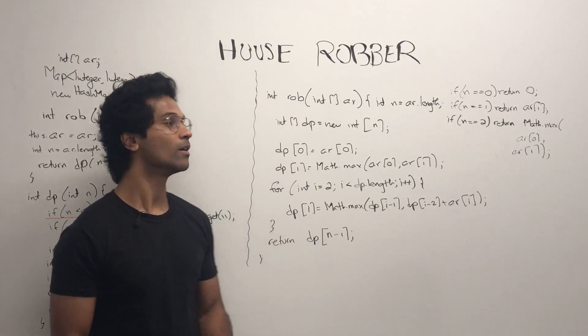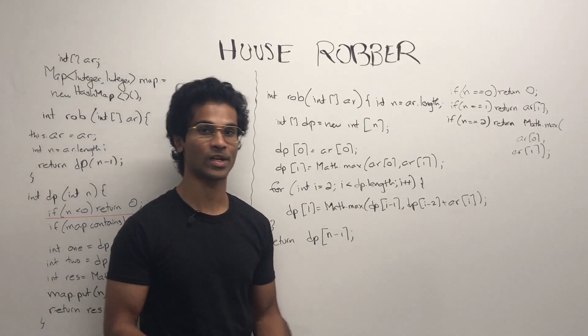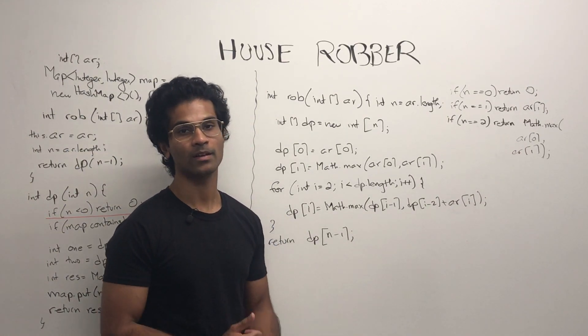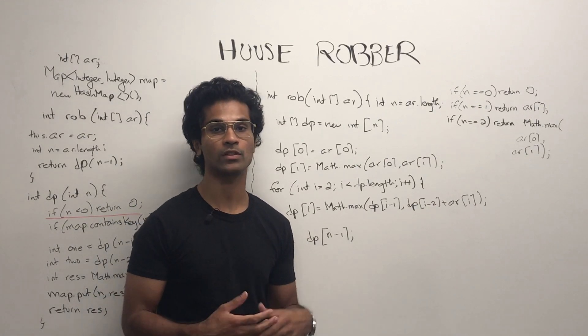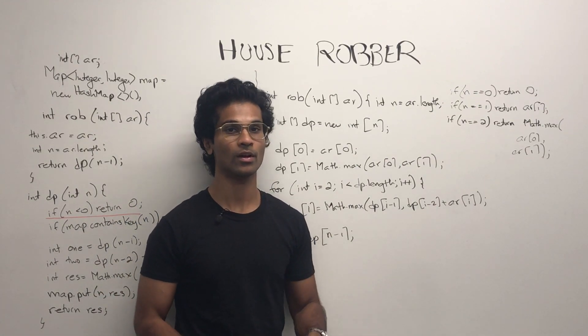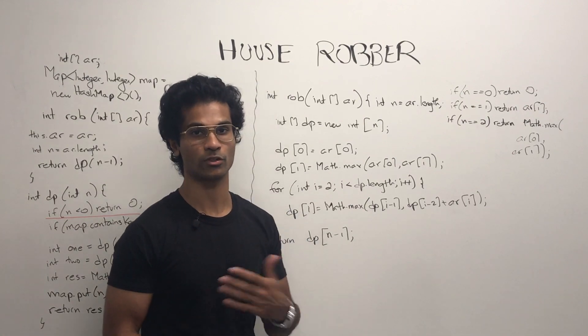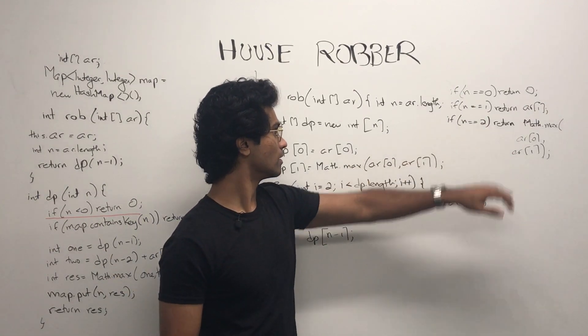For the bottom-up tabular approach, first we're just going to do some basic checks, like the length of the array. If it's zero, we return zero. If it's one, we just return whatever element's in it. If it's two, we just return the maximum of the first or second number.